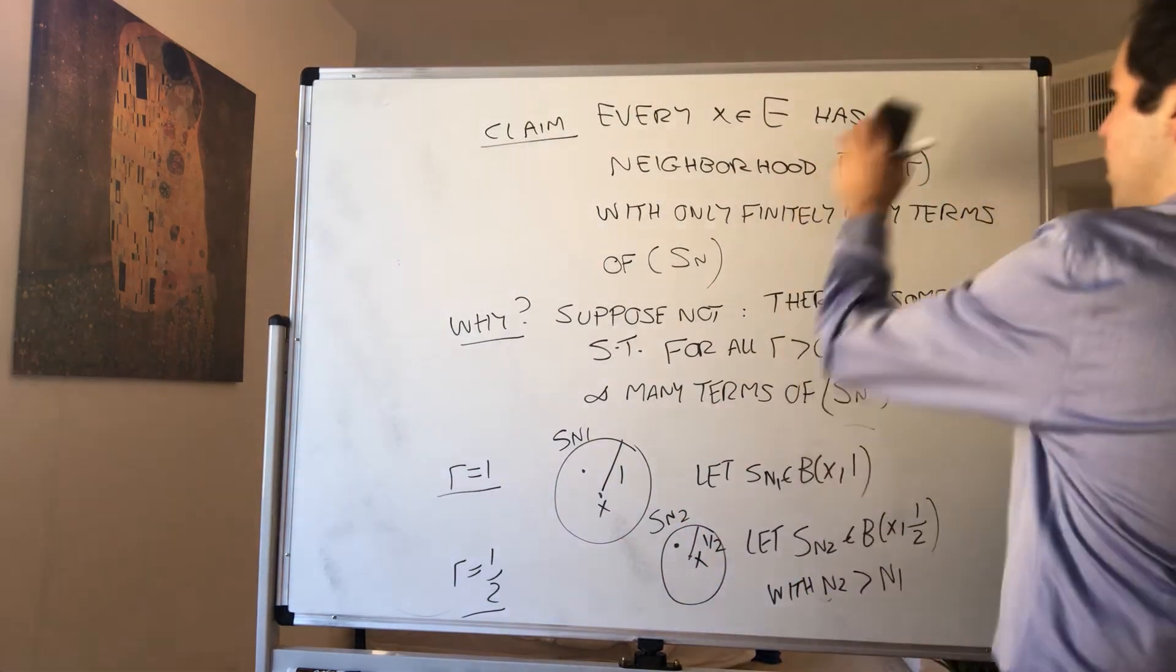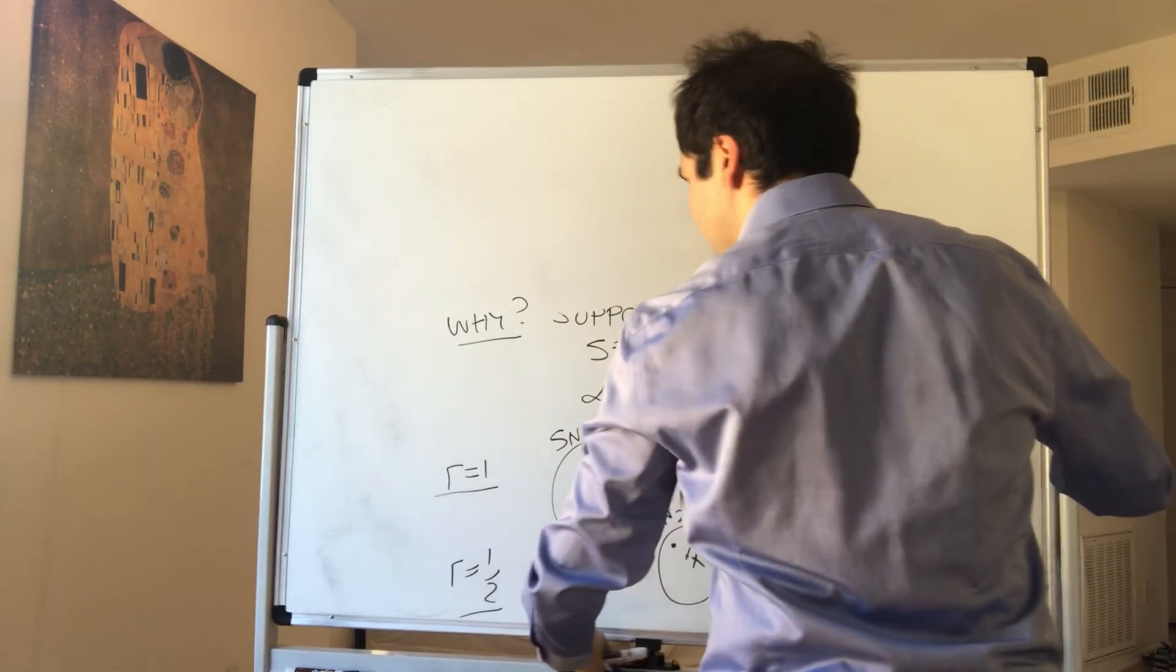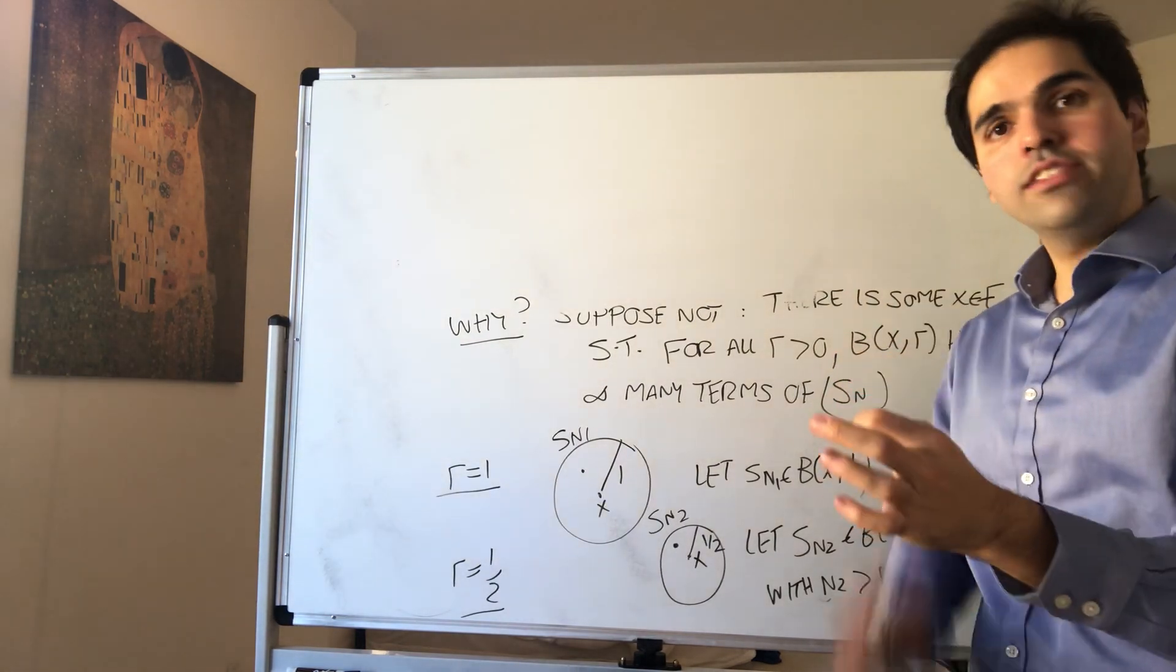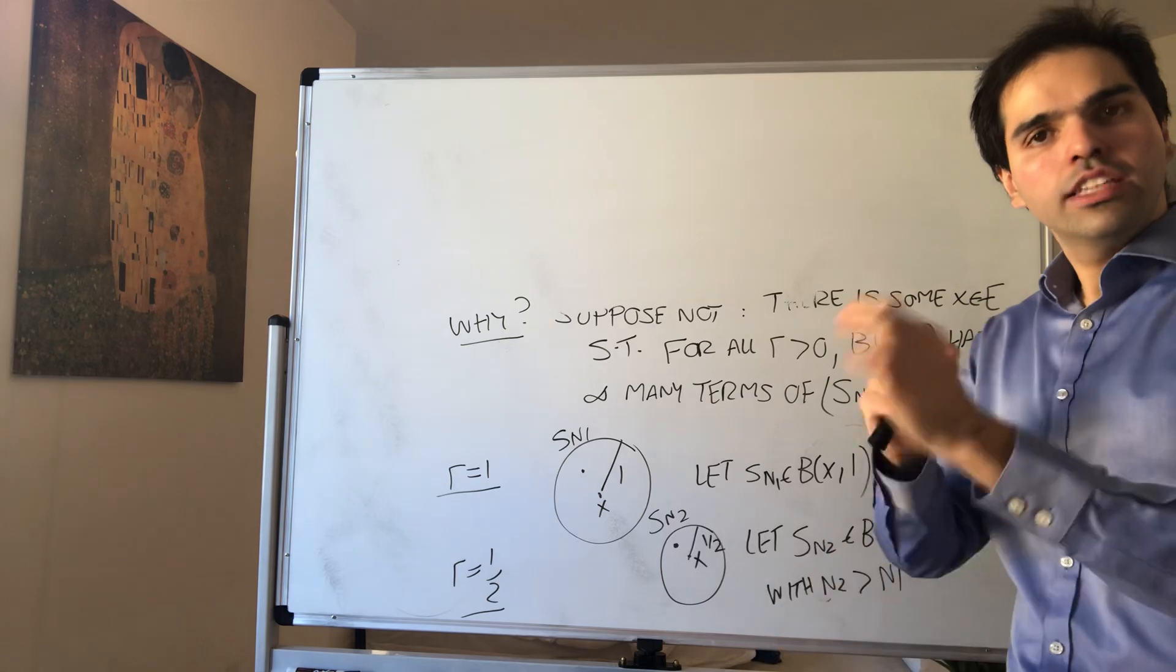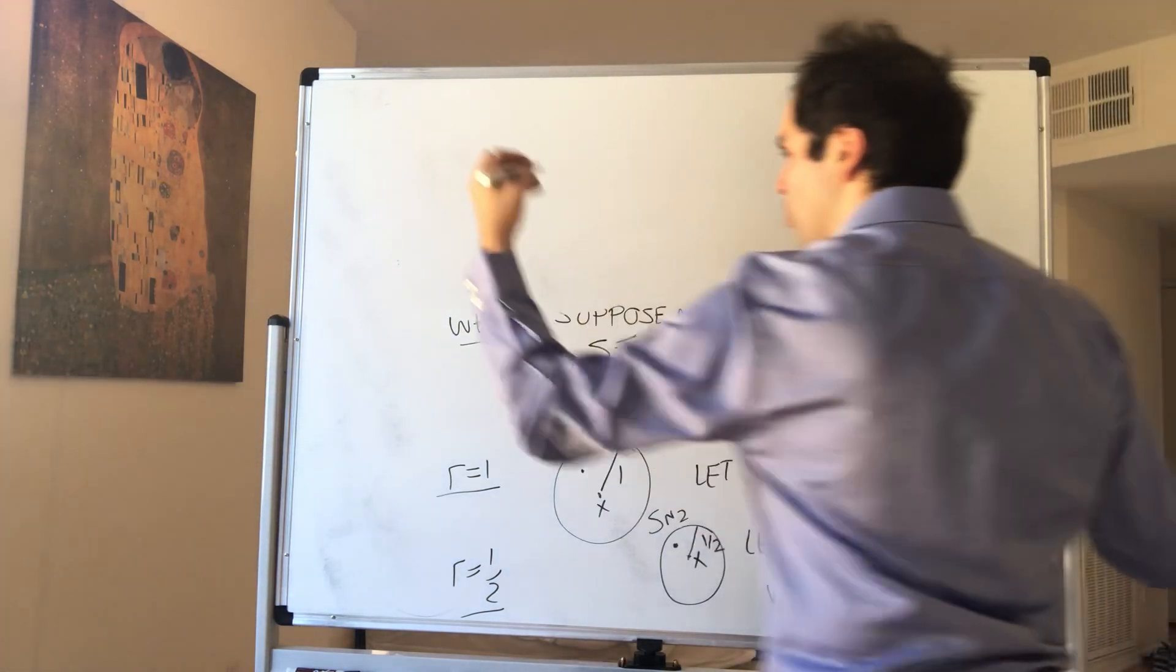And so on and so forth. So in this way, what is Sn3? It's a term of the sequence after n1 and n2 that is in the ball of radius 1/3. So, therefore, we obtain a subsequence Snk.